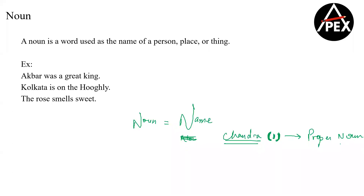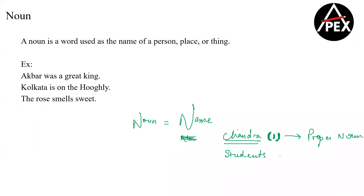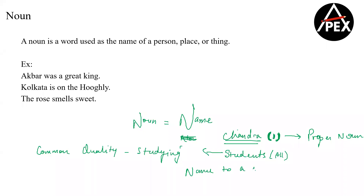Now, if I say that there is Chandra, Anjali, Charan, and other people on this chat — and all of you are studying — if I am giving any particular name to all of you together, like 'all the students,' this is for all of you together. And why am I calling you students? Because you have one common quality — you guys are studying. So if I am giving a name to a common quality, I call it a common noun.